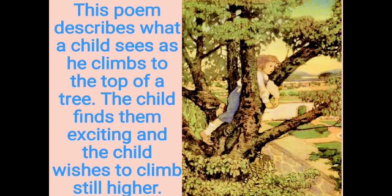This poem describes what a child sees as he climbs to the top of a cherry tree. To a grown-up person, the things he sees may seem ordinary because the curiosity decreases with age. But the child finds the same things more exciting and the child wishes to climb still higher to see many more things. So, let us find out what else he sees from the top of a tree.